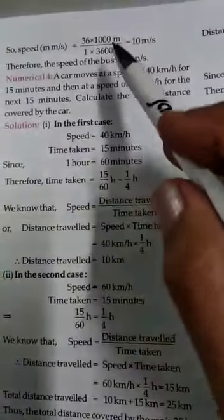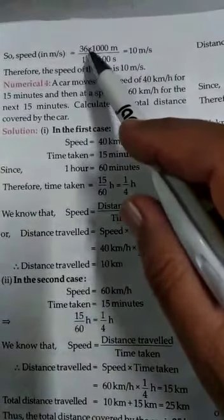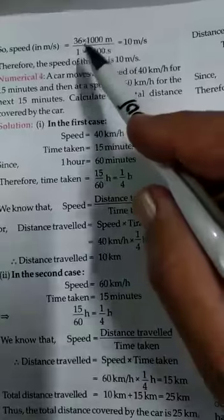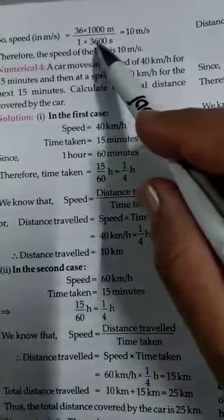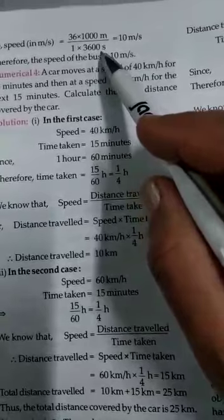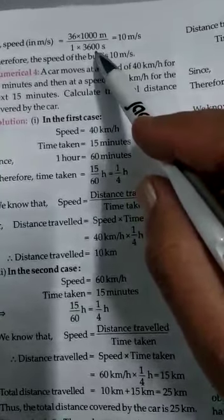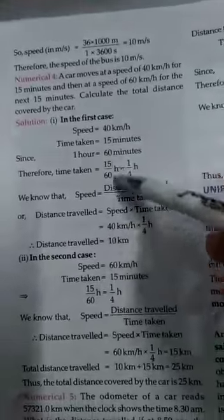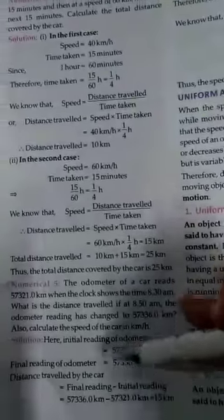So, speed in meter per second nikalene ke liye, aap ne kya kiya: 36 km ko meter me change kara, thousand se multiply karke. 1 hour ko aap ne 3600 se multiply karke usko change kar liya second me. Aap ka aagya yahan 10 meter per second. Isi tariqe se, aap ke aur aage ke examples se aap niko padiye ga, samaj ye ga.